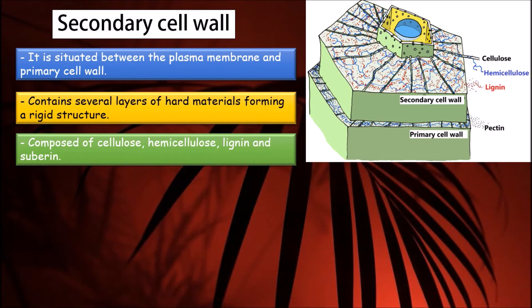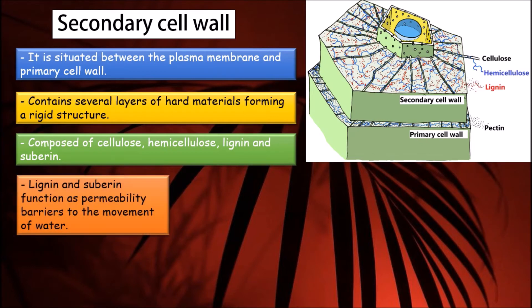Lignin and suberin are complex molecules that function as permeability barriers to the movement of water. Lignin cement anchors cellulose fibers together, providing hard and rigid matrix, giving the cell wall extra support.